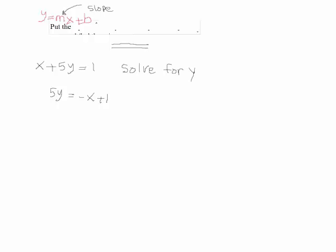If you want to show the steps, it would look like I'm subtracting x from both sides of the equation. That's what we're really doing. So I would get 5y is equal to minus x plus 1.